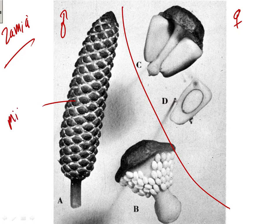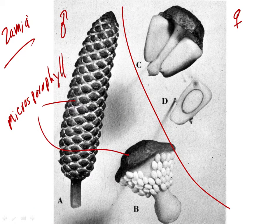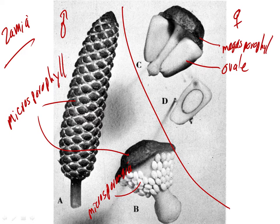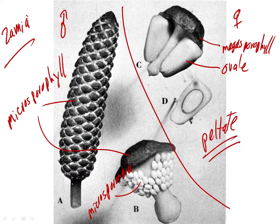So here's a microsporophyll, and these are the microsporangia. On the female side, these are the ovules. This is a megasporophyll. You notice that in both cases the sporophylls are peltate — umbrella-shaped — especially in the female, where it's really peltate with the ovules hanging down toward the axis.